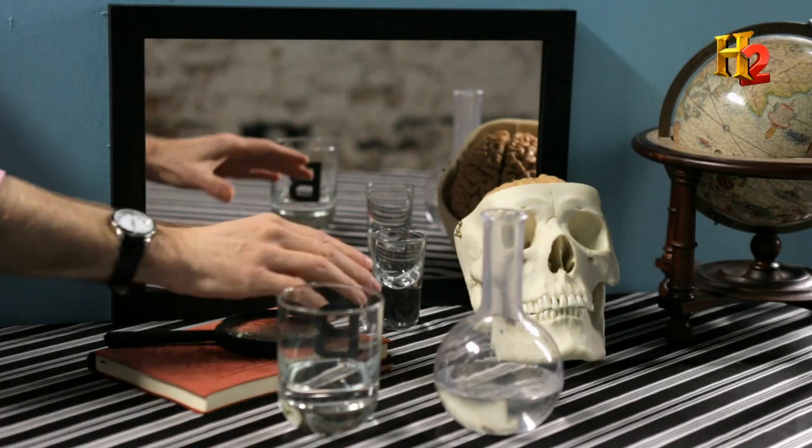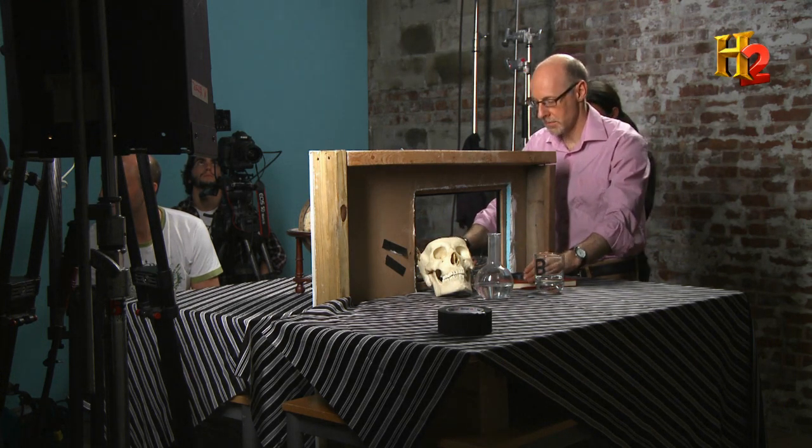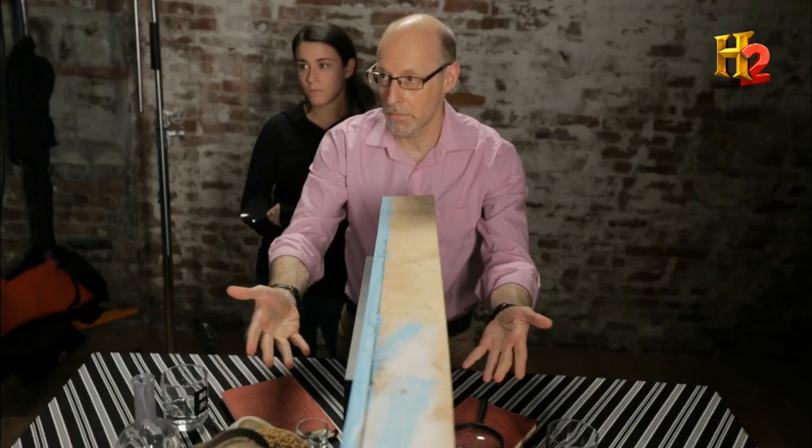If this trick fooled you, it's because you assumed it was a mirror, when it was really a piece of glass. Most of the time, we're really good at observing our surroundings, working out exactly what's going on. But in order to be that good, we are making assumptions, and we're not aware of those assumptions.